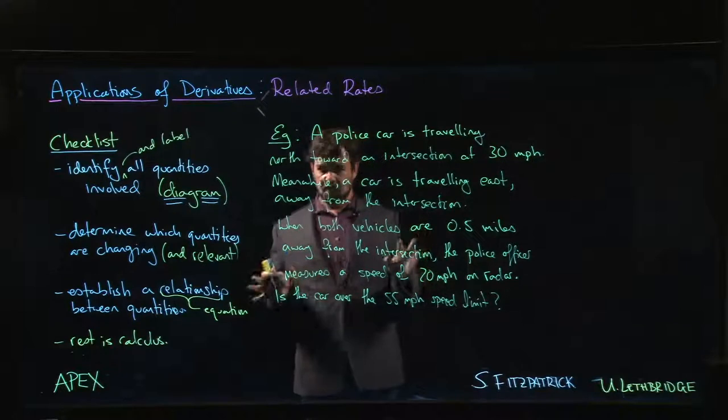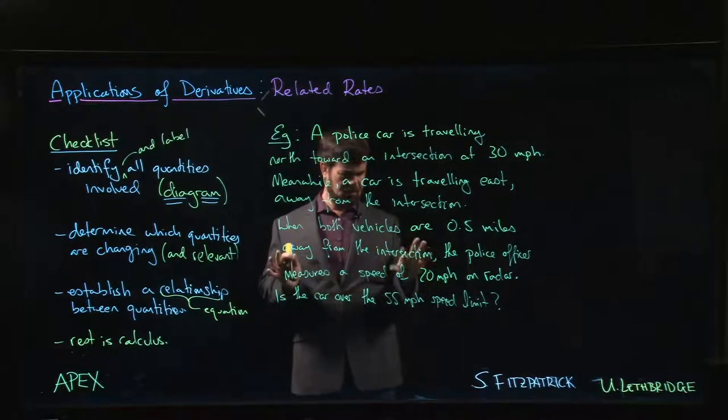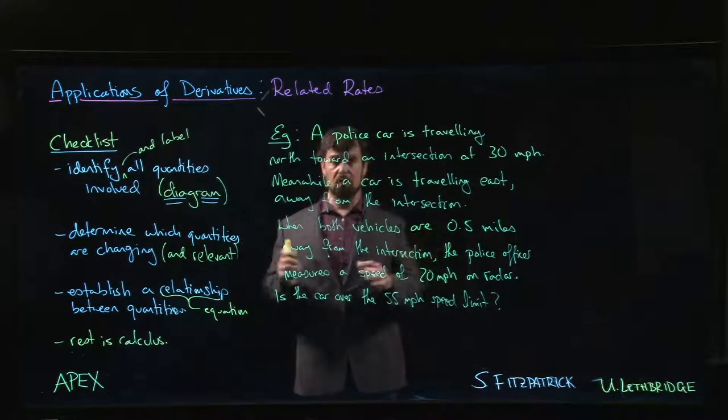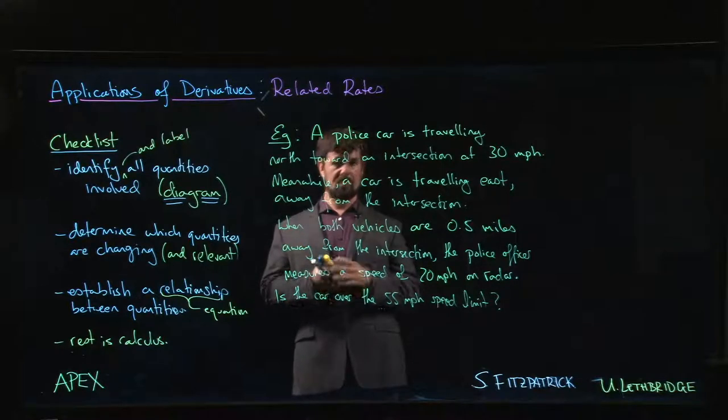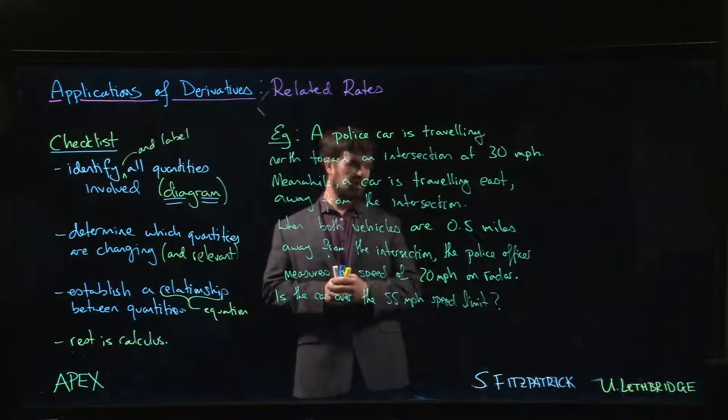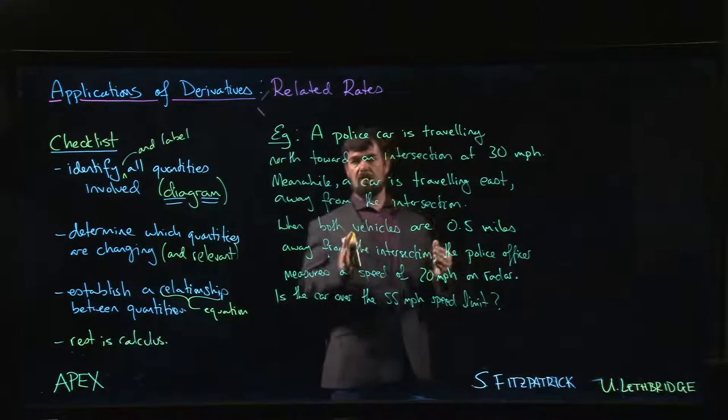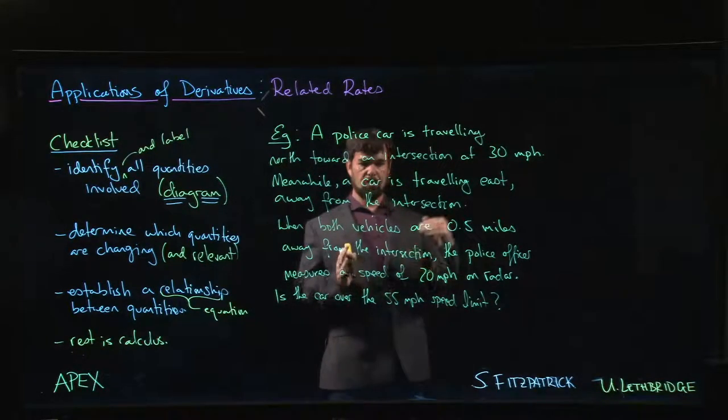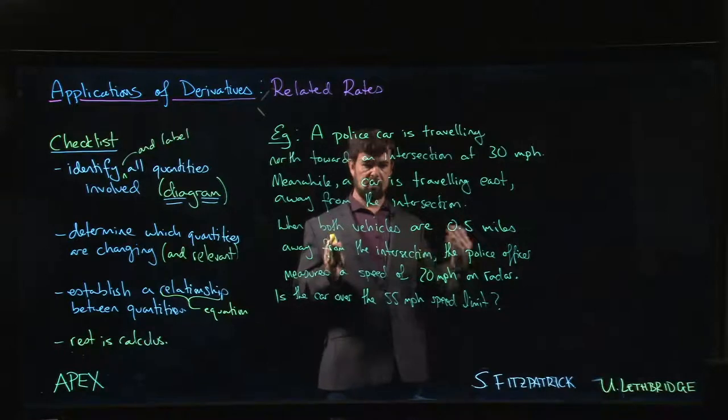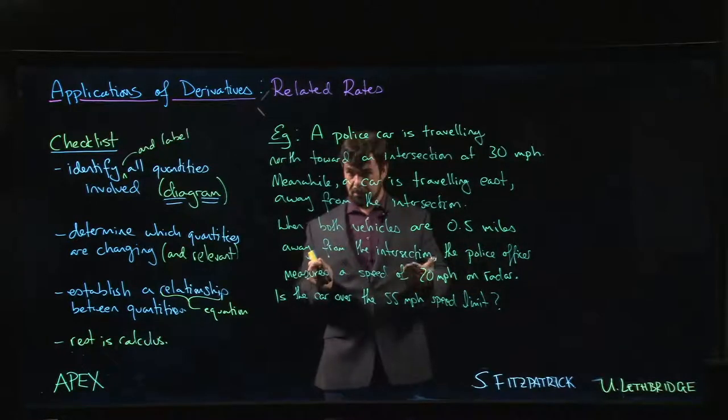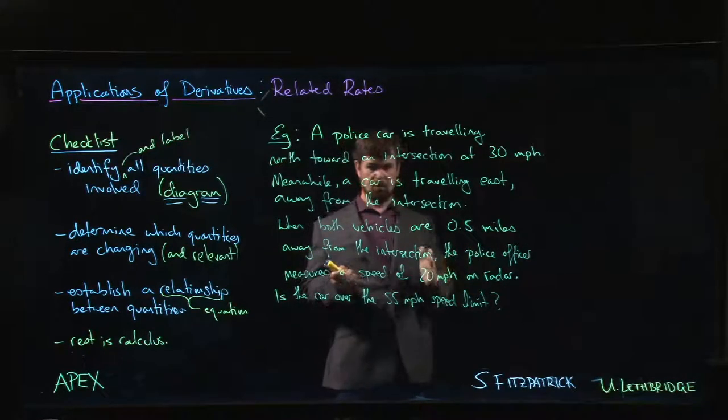Alright, here's a fairly typical but also not very practical related rates problem, because this is not how police cars actually measure speed. We have a police car that's traveling in a direction which is perpendicular to the direction of travel of some other car, and he's trying to measure the speed by radar.